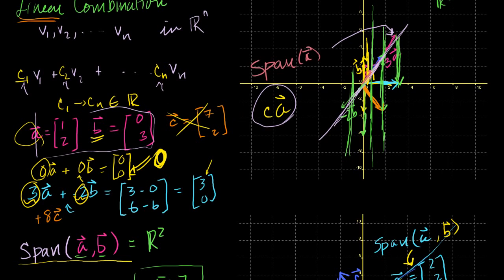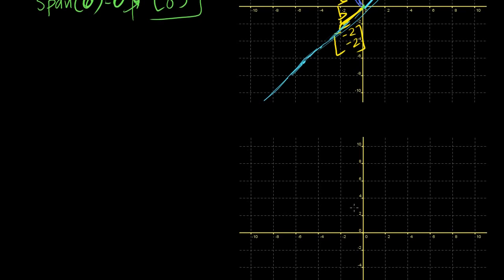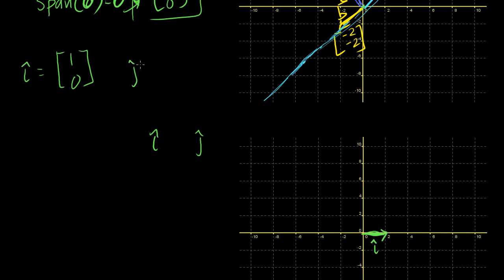The two vectors you're most familiar with that span R2 are, if you've taken physics, the i and j unit vectors. In vector notation, i is [1, 0] and j is [0, 1]. You learn that they're orthogonal — 90 degrees — and you can clearly represent any vector in R2 by these two vectors. The fact that they're orthogonal makes them extra nice. And I'm going to throw out a word I haven't defined yet: these form a basis for R2.